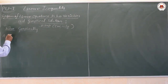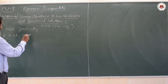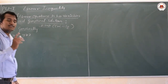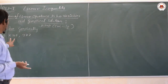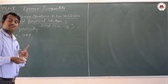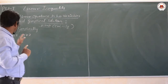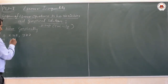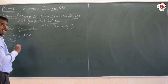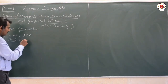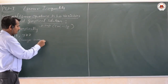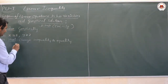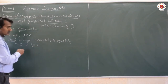The first problem is very simple: x ≥ 3 and y ≥ 2. Step one is to change the inequalities to equalities, giving us x = 3 and y = 2.